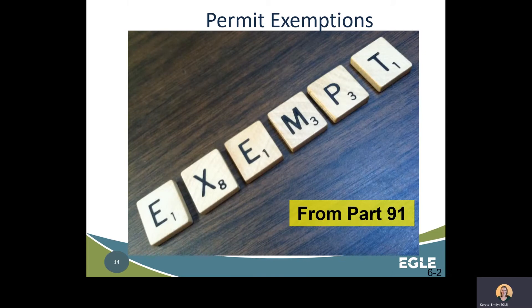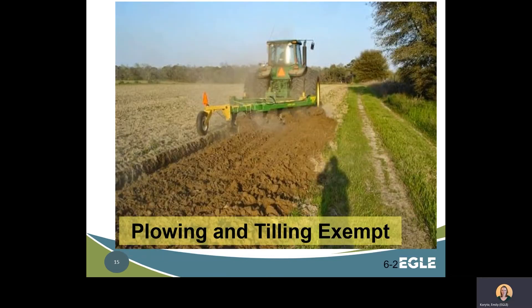The next few slides provide an overview of permit exemptions; however, the statute and rules should be consulted for specifics. Note that only plowing and tilling is exempted from the definition of an earth change in Part 91 — all other exemptions are exempt from permitting requirements only but may still be subject to enforcement provisions. Plowing and tilling for crop production are exempted from the definition of an earth change. Examples that do not constitute plowing or tilling include building a barn, digging a ditch, construction of a farm road, stump removal, and installation of a drain tile.